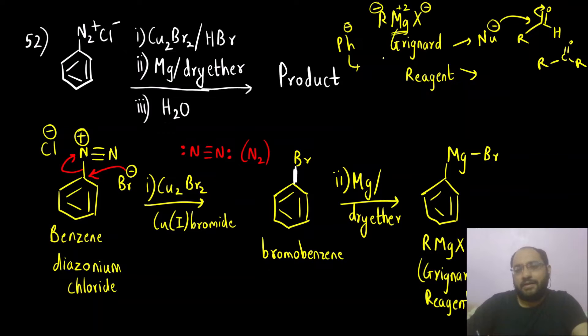Another way is Grignard reagent can also act as a base. What is the role of a base? Base is going to accept proton. Acid what it does? It donates H plus ion and base what it does? Acid donates H plus ion and base will accept proton.